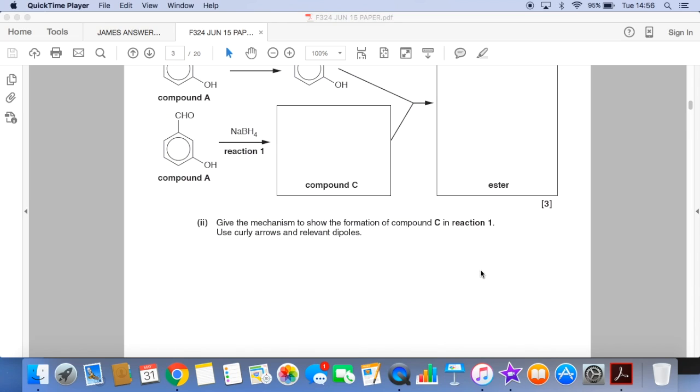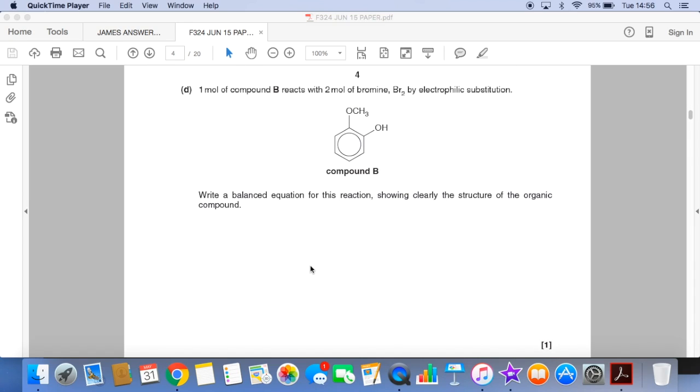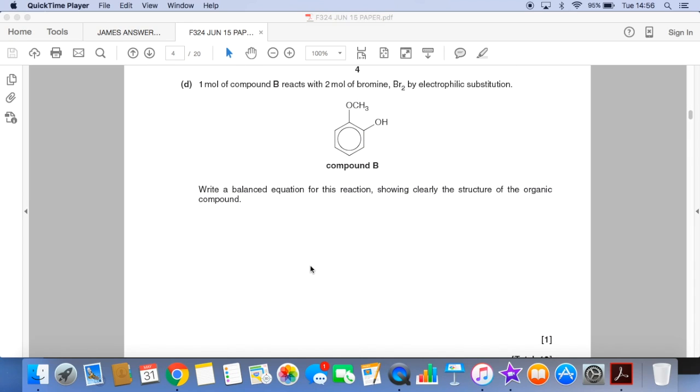we've got to give the mechanism to show the formation of C in reaction one. And then the last part of the question, one mole of compound B reacts with two moles of bromine by electrophilic substitution. We have to write a balanced equation and show clearly the structure of the organic compound.